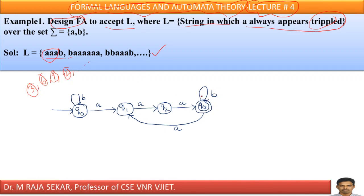If you get a B, you must stay in the current state, because we need 3 consecutive As. Even initially, if you get a B, we can keep it there. After reaching the final state, if we get one more A, we have already traversed 1, 2, 3, so this becomes the 4th one — we need 2 more As, the 5th and 6th. Take a few sample strings and you can understand this.